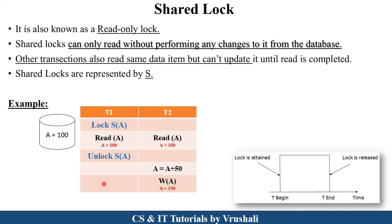This is called shared lock — that's why it maintains consistency in the database. Suppose T1 reads value A = 100 and T2 changes the value to A = 50 simultaneously — that is a concurrency problem, and shared lock solves this concurrency problem.